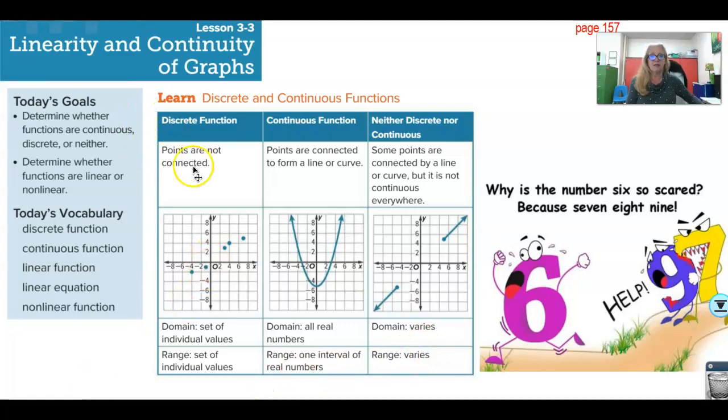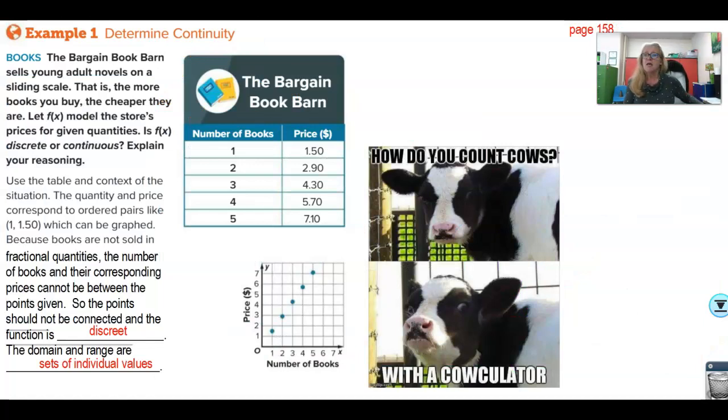So the first thing you have to tell me is, is it discrete, continuous, or neither? That's only three options. The second part of 3.3, you will have to determine if a function is linear or nonlinear. Linear means it makes a straight line. Nonlinear means it doesn't. How do you count cows? With a calculator.